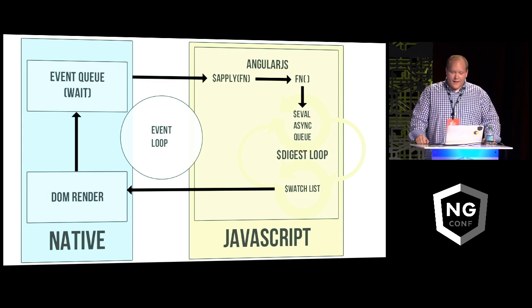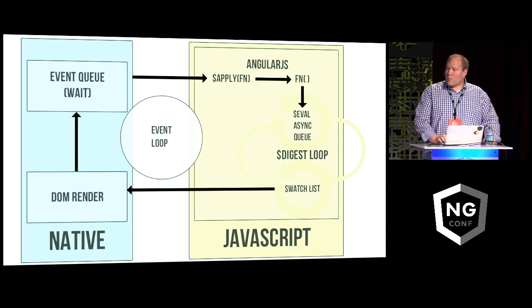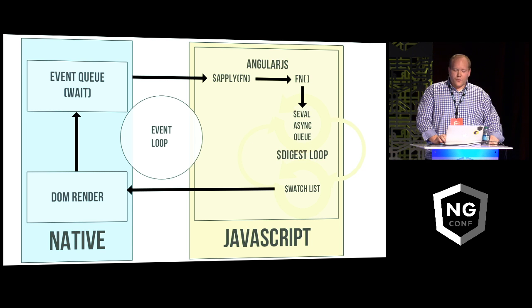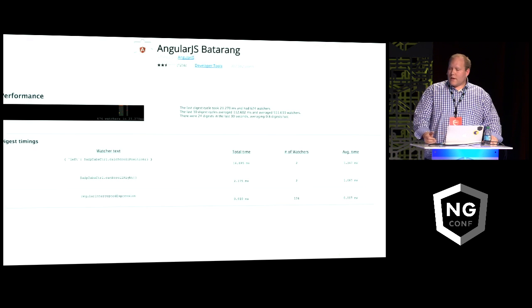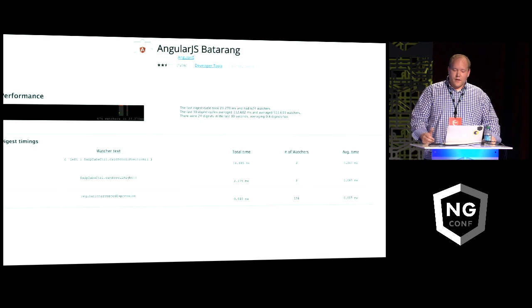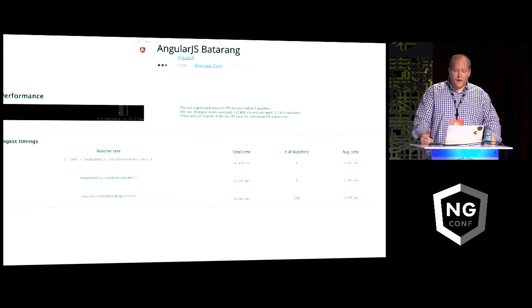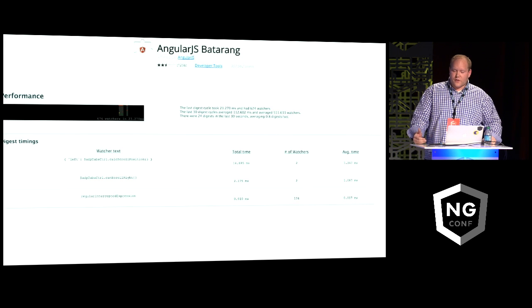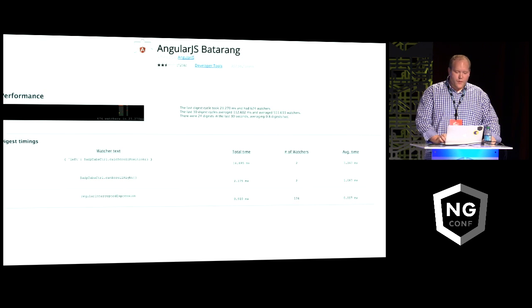Everyone here should be at least a little familiar with what the digest cycle is — in Angular 1.5, 1.4, and older versions — and how it loops through the watchers doing dirty checks. Using Batarang, we can peek into our applications without actually modifying our code and look at the application itself. What you can see here is that the page I ran this on had 674 active watchers, and the last digest cycle took 23 milliseconds.